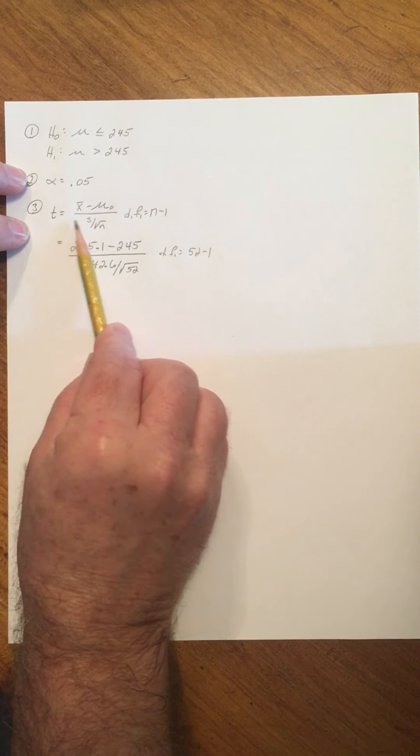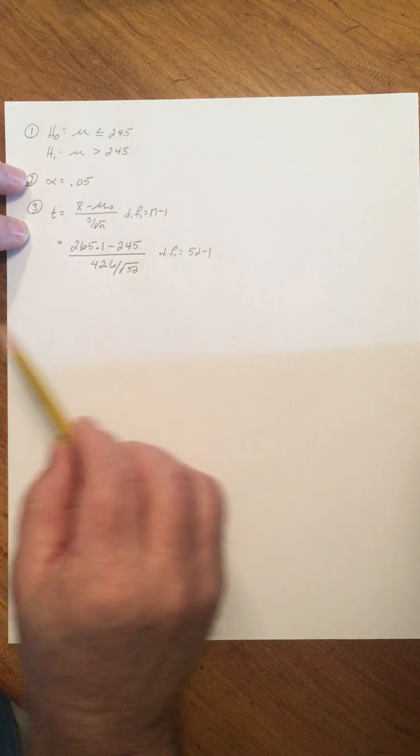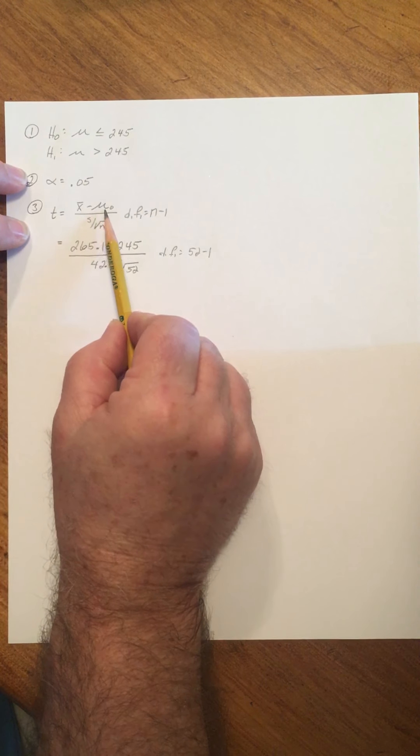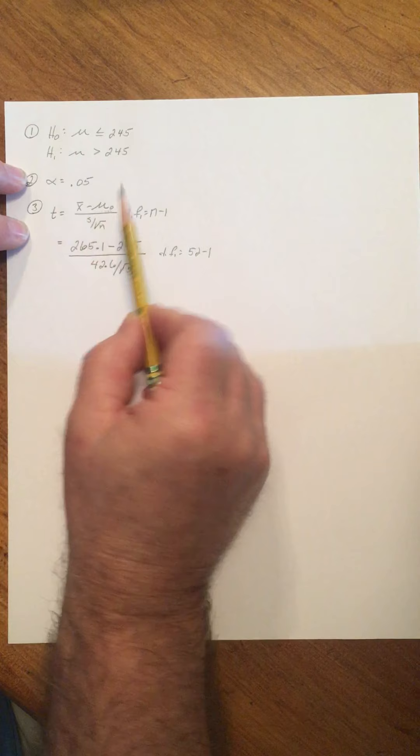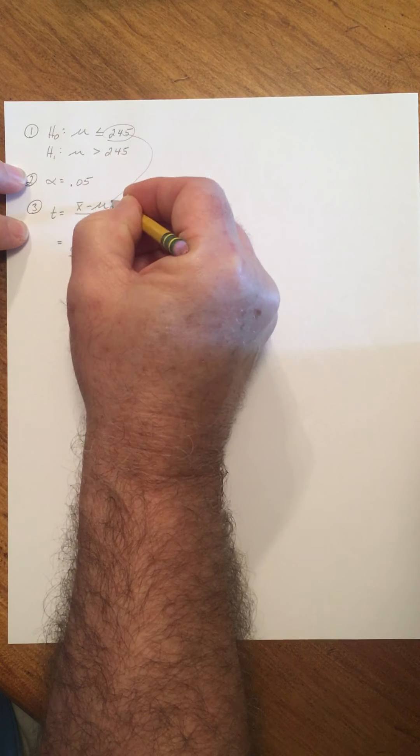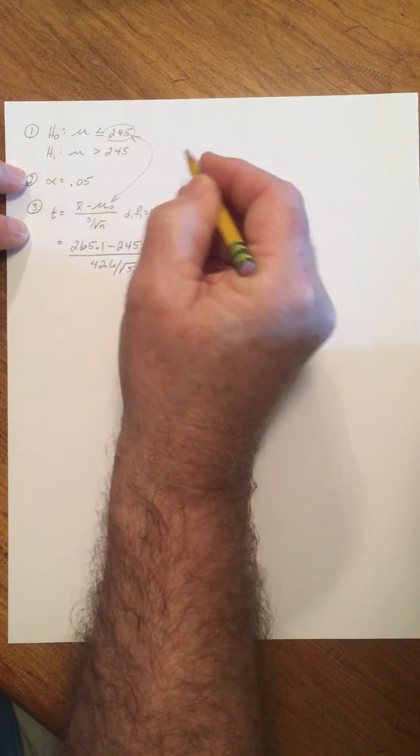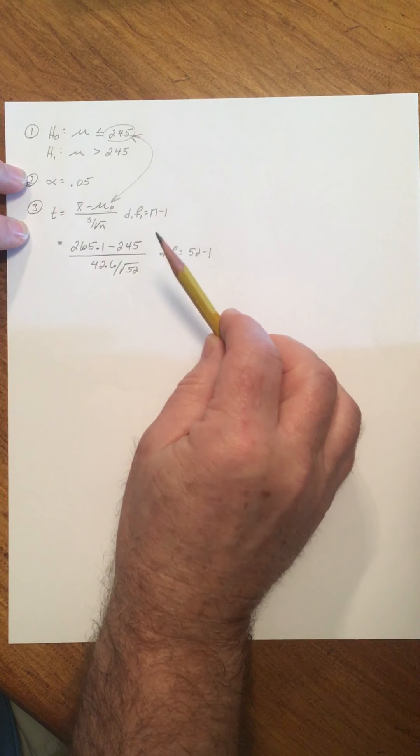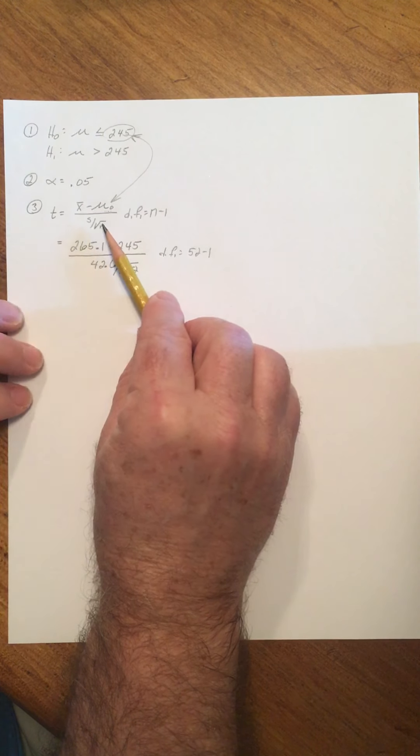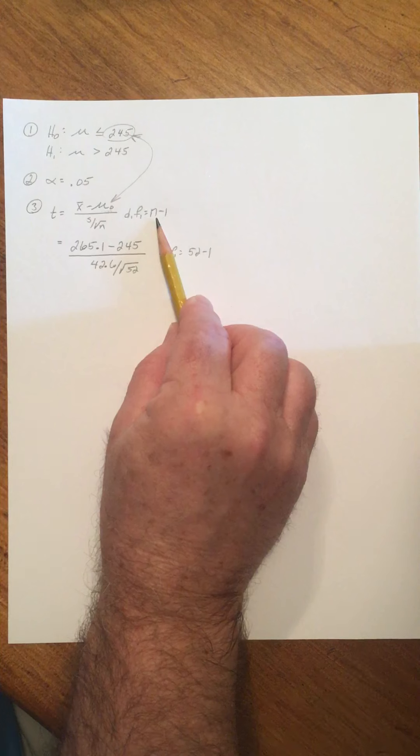So we have x bar minus mu zero. Remember what that means. Anytime we have subscript zero, that number comes from the null hypothesis. Divide by s over square root of n with degrees of freedom.